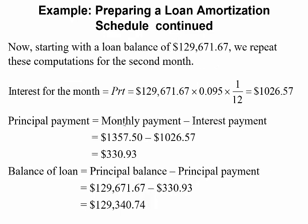For the second month, starting with the new loan balance of $129,671.67, we repeat these computations. The interest is the principal times the rate times the time — the only thing that changed is the principal. The interest you're paying is now $1,026.57, so it's gone down a little. You're paying about $3 less in interest, which means $3 more towards principal. The principal payment is the monthly payment minus the interest, giving $330.93. After two months, you still owe $129,340.74 on the loan.